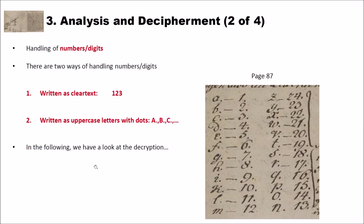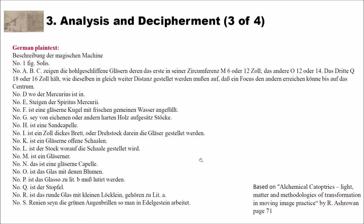And in the following now, we will have a look at the decryption of our ciphertext. And the decryption is also based on the aforementioned book. And here you can see the German plaintext. But in a minute, we will have a look at the English one. As you can see, this looks like an enumeration. You have always this NO here for number. And then you have A, B, C, D, E, F, G, H, I, and so on.